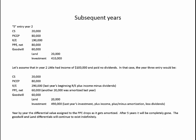The goodwill is still there, and the land differential is still there. The investment account has moved from $410,000 to $490,000 — last year's balance of $410,000 plus income of $100,000 minus amortization of $20,000. Year by year, the differential value assigned to property, plant, and equipment will drop. After five years it will be completely gone. The goodwill and land differentials are going to continue to exist indefinitely unless and until they get impaired.